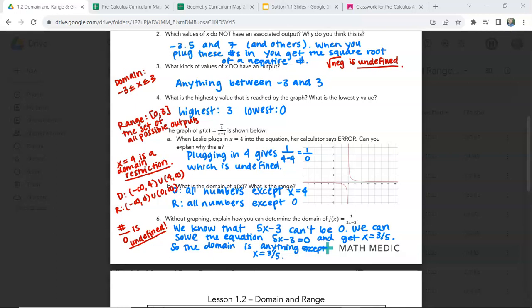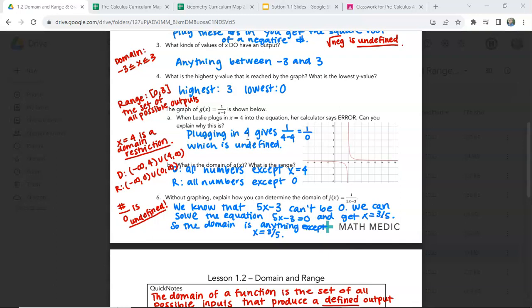This graph, 1 over x minus 4, is shown below. When Leslie plugs in x equals 4 into the equation, her calculator says error. Can you explain why that is? So plugging in 4 gives us a divide by 0 case here. 4 minus 4 is 0. We cannot divide by 0. That is undefined. So that means that x equals 4 is a domain restriction.